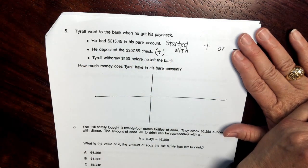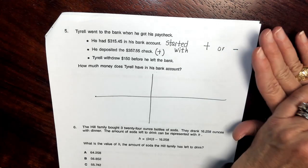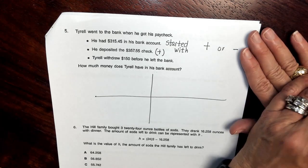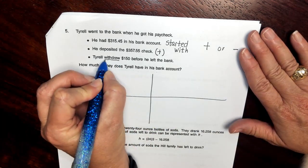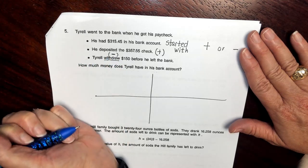The next statement says Terrell withdrew $150 before he left the bank. So when we think about the word withdrew, we think about taking away. So we're going to subtract $150.